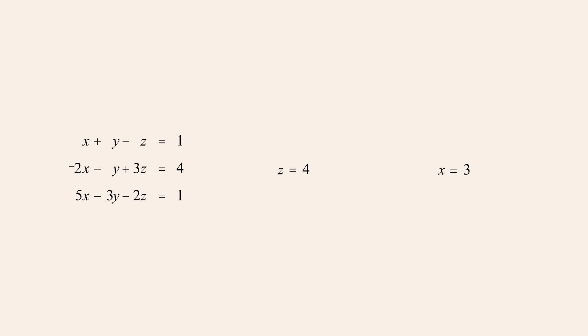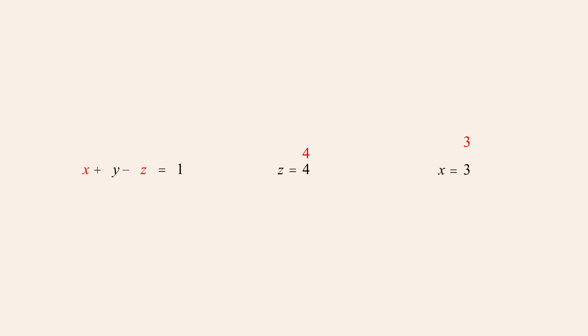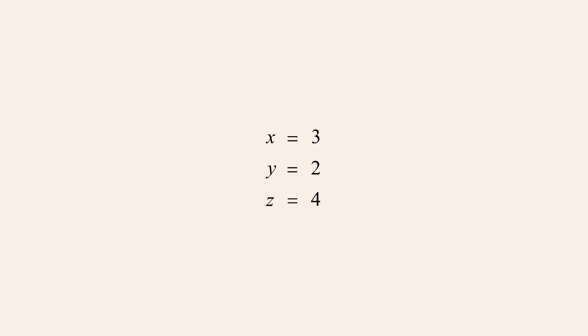Now that we know the values of x and z, these values can be substituted back into any of the three original equations to find the value of the remaining variable, y. We'll use the first equation since it's the simplest. Setting the values of x and z to three and four, we get y minus one equals one, or adding one to both sides, y equals two. So the solution for this system is x equals three, y equals two, and z equals four. This solution can also be represented as the ordered triple three, two, four.